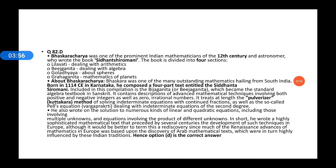Bhaskaracharya is one of the prominent Indian mathematicians of the 12th century and an astronomer who wrote the book Siddhanta Shiromani. The book is divided into four sections: first, Lilavati — dealing with arithmetic; second, Bija Ganita — dealing with algebra; third, Goladhyaya — dealing with the sphere; and fourth, Graha Ganita — mathematics of the planets.